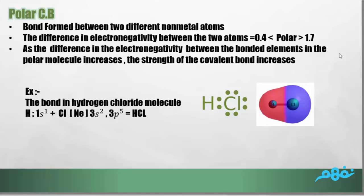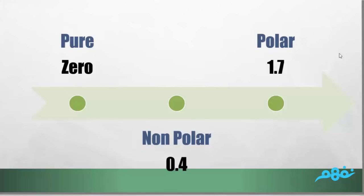Here is a summary: for pure covalent bonds, the electronegativity difference is zero and the atoms must be similar non-metals. For non-polar covalent bonds, the difference is between zero and 0.4 and the atoms must be different non-metals. For polar covalent bonds, the difference is between 0.4 and 1.7. Any value above 1.7 indicates an ionic bond or ionic compound.